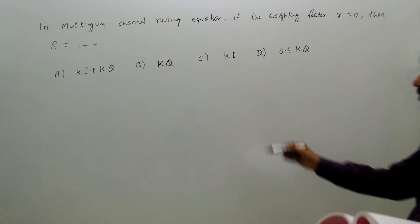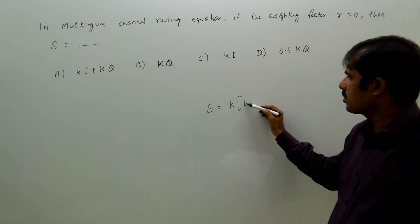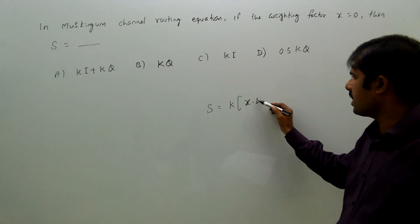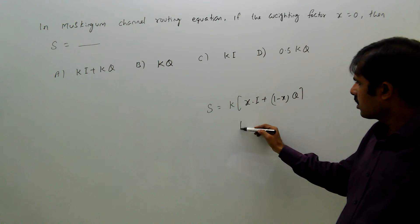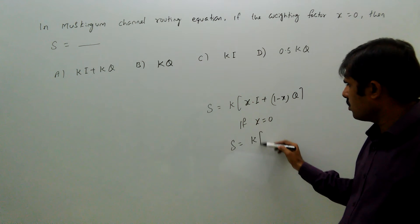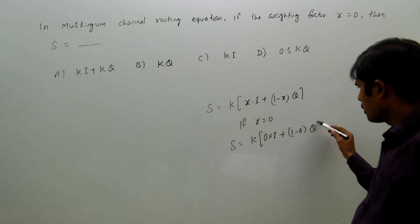So here we know storage equals K times [x times I plus (1 minus x) times Q]. If x equals 0, then S equals K times [0 times I plus (1 minus 0) times Q].